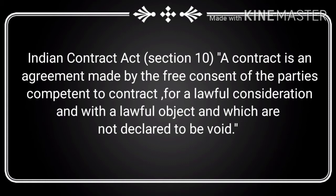As per this definition, a valid contract needs the following features: the first feature is an agreement; second is proposal and acceptance; third is free consent of parties; fourth is parties competent to contract; fifth is lawful consideration; sixth is lawful object; and the last one is not declared as void.